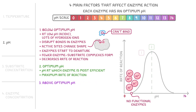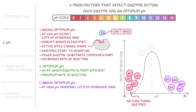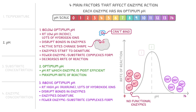Above the optimum pH, the same thing happens as when the pH is too low, but for different reasons. At a high pH, the conditions are alkaline, meaning there are lots of hydroxide ions floating about. These hydroxide ions also disrupt the bonds in the enzymes, and when those bonds are broken, the enzymes denature, fewer enzyme-substrate complexes form, and this decreases the rate of reaction as the pH increases further. On our graph, we can see that the rate of reaction starts decreasing as soon as the pH rises above the optimum.